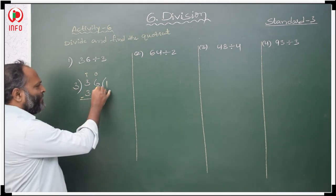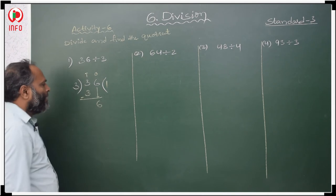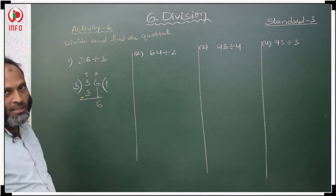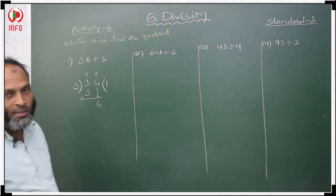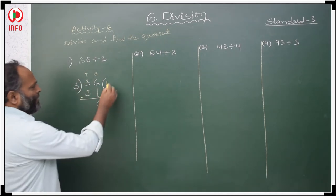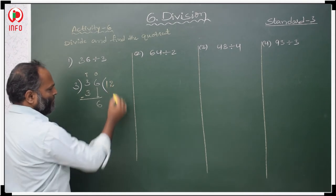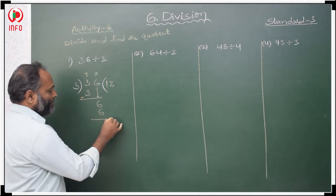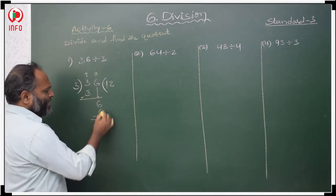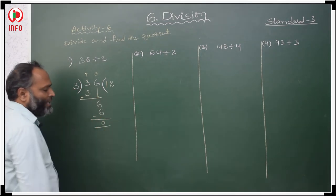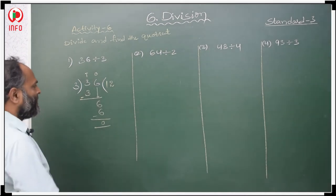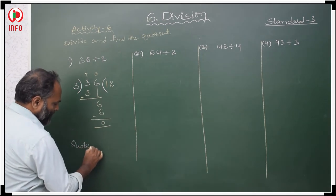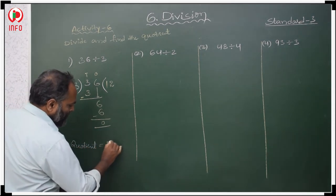Same number minus same number is 0 — do not take. Then take the 1's place. When will you get 6 in the 3 table? 3 twos are 6 ones. We write 2 in the quotient. Same number minus same number is 0. So the quotient is 12.